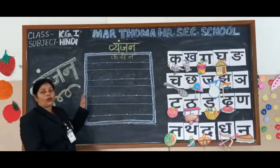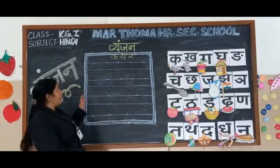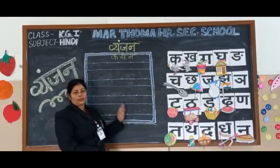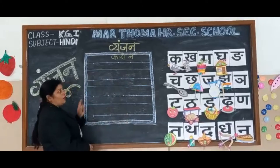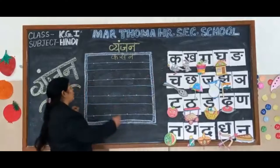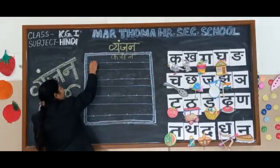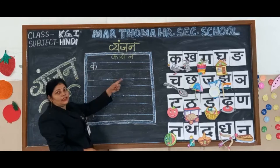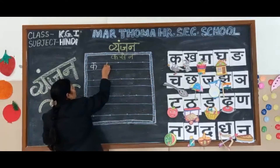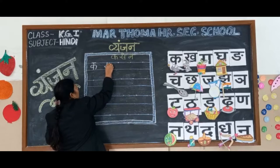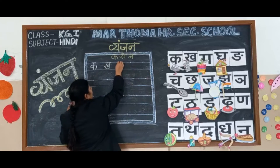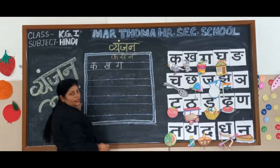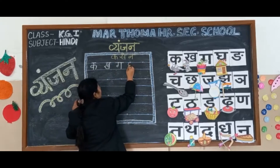Look at this. This is a Hindi copy page. We will write today Kaase Nata in sequence. First is Ka se Kabuta. Next question is Ka se Kharoosh. Next is Ka se Ramda. Ka se Ramda. Ka se Ghar.